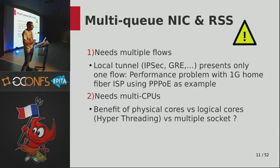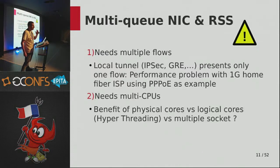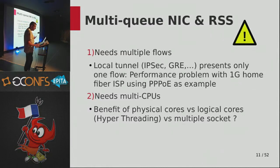As a real example in France, many people use a PC Engines APU with PFSense at home. But their ISP Orange requires PPPoE, and once they use PPPoE they no longer have multiple flows - everything uses just one core and performance takes a very big hit. This is a very important step to understand.